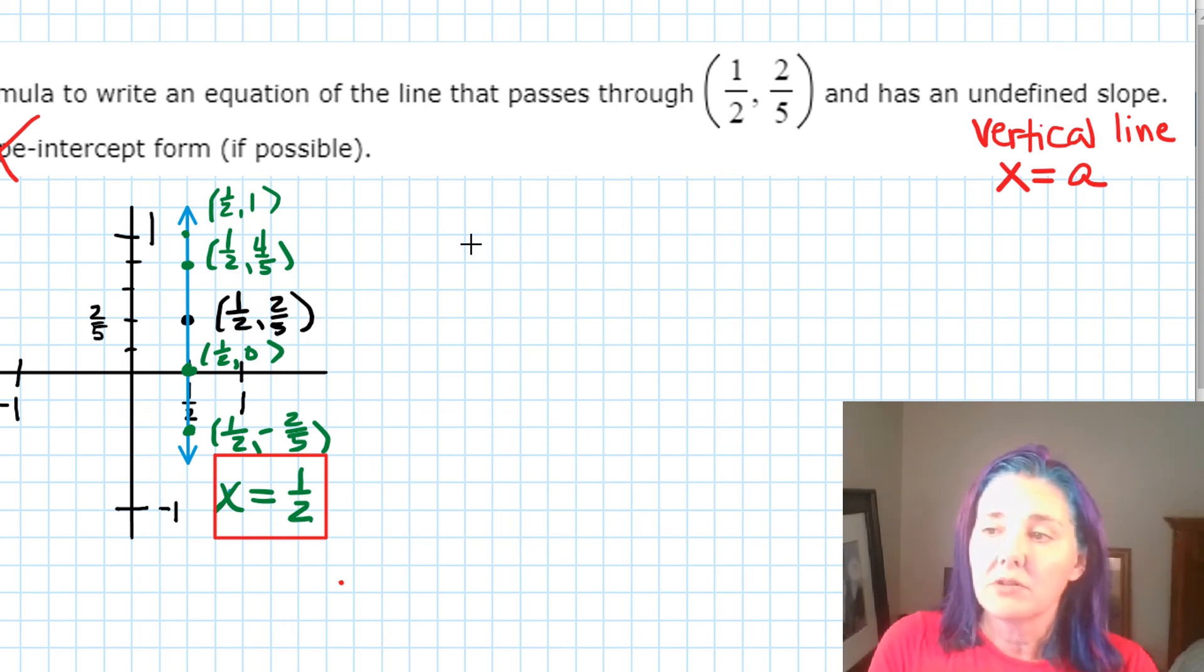So if they give you a pair of coordinates and they say, oh, this pair of coordinates is on a vertical line, you know the line has to be x equals whatever the x value is. In this case, x equals one-half.